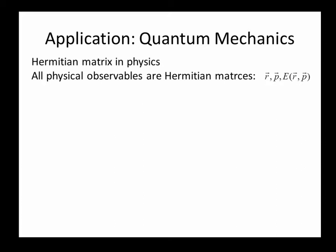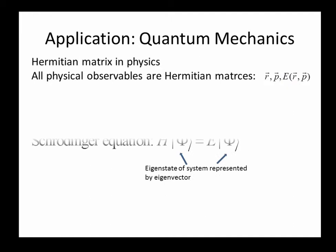One of the applications of Hermitian matrix is quantum mechanics. In quantum mechanics, all of the physical observables such as position, momentum, energy is represented by a Hermitian matrix or a Hermitian operator. Let's take Schrödinger equation for example.